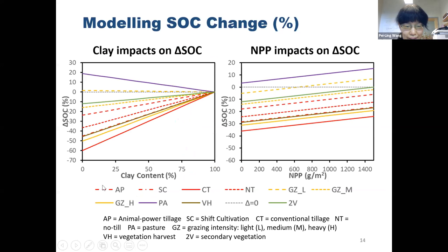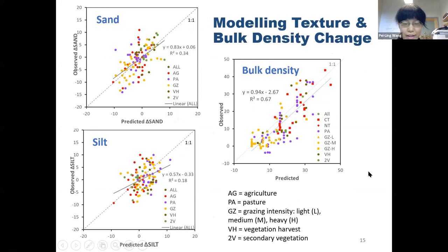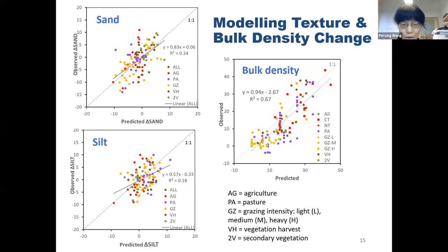This model nicely explains how soil organic carbon change varies across different land uses and under different environments. Soil organic carbon loss decreases with increasing clay content, and the negative change in soil organic carbon also decreases with increasing MAP. Using a similar methodology, we also build models to predict how sand, silt, clay, and soil bulk density change under various human land uses and land covers. Now we have a set of models that can predict soil property changes for different land use and land cover types and environmental conditions.